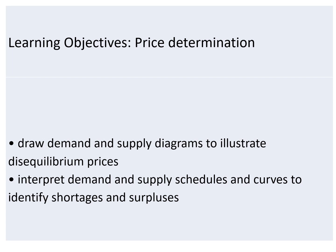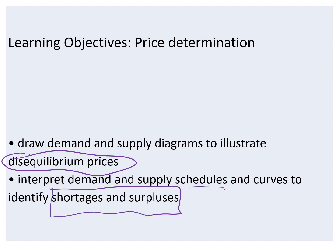Now we will draw demand and supply diagrams to illustrate equilibrium prices, and we will be interpreting demand and supply schedules and curves to identify where we have shortages and surpluses. A shortage is when you have excess demand, and a surplus is where you have excess supply.